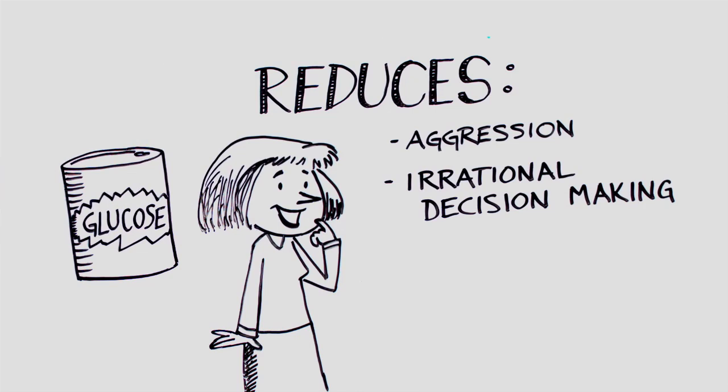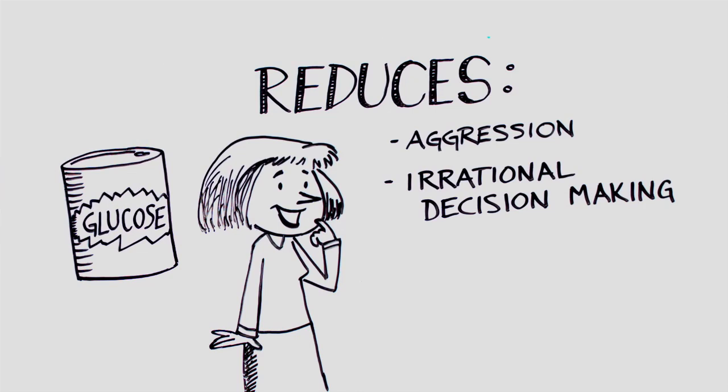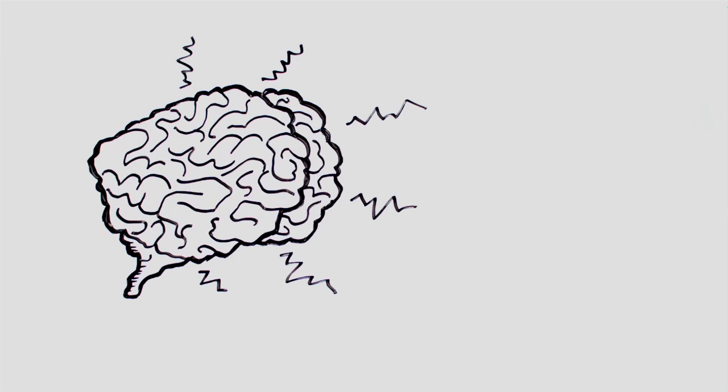A large body of work now points to the importance of energy as part of the resource that's involved in willpower. Giving depleted people a boost of glucose reduces their aggression, their irrational decision-making, and their financial impulsiveness. It tells your brain that energy is coming on board, and you have to allocate your energy effectively.